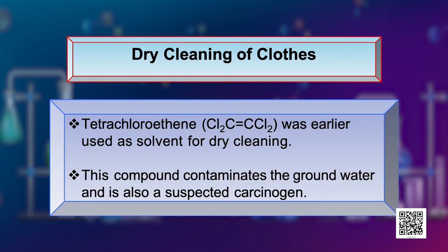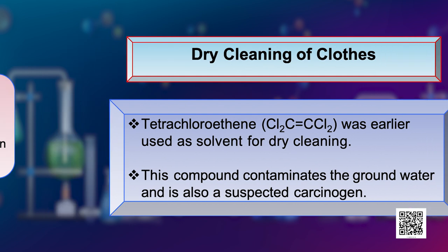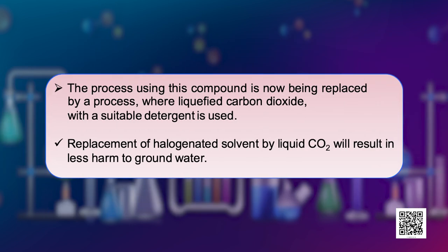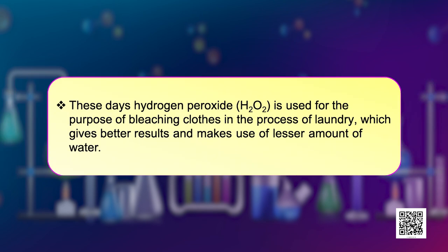Tetrachloroethane was earlier used as a solvent for dry cleaning purposes. This compound contaminates the ground water and is also a suspected carcinogen, that is, cancer causing. The process using this compound is now being replaced by a process where liquid carbon dioxide with suitable detergent is used for this purpose. The replacement of halogenated solvent by carbon dioxide will result in less harm to the ground water. These days hydrogen peroxide is used for bleaching clothes in the process of laundry, which gives better results and uses a lesser amount of water.